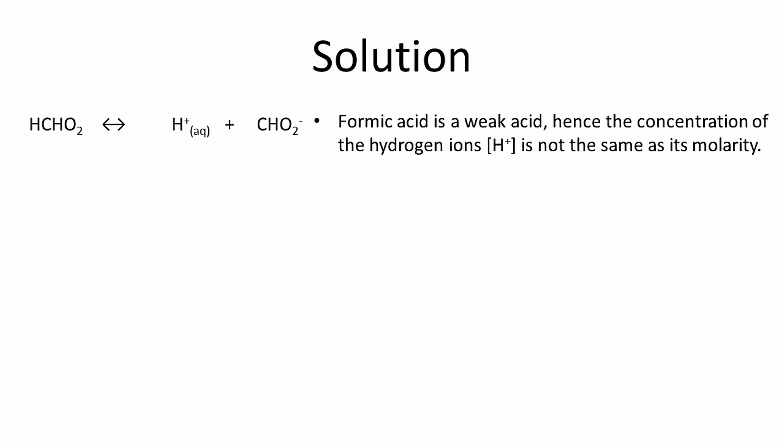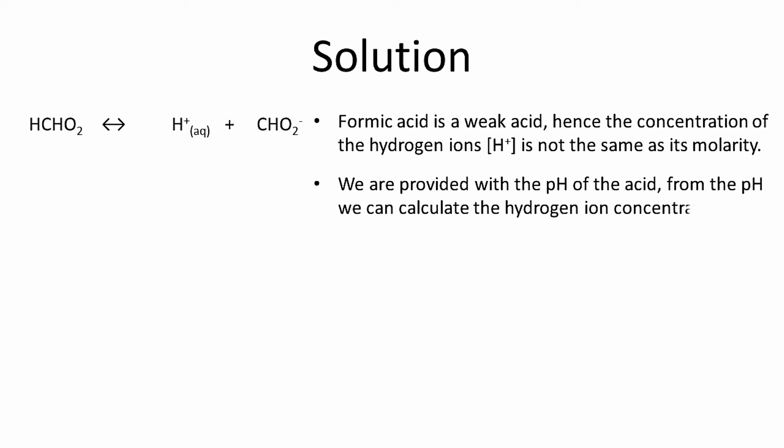Formic acid being a weak acid, the concentration of hydrogen ions is not the same as the concentration of the acid. The concentration of the hydrogen ions can be calculated from the pH of the acid, which is given to us.